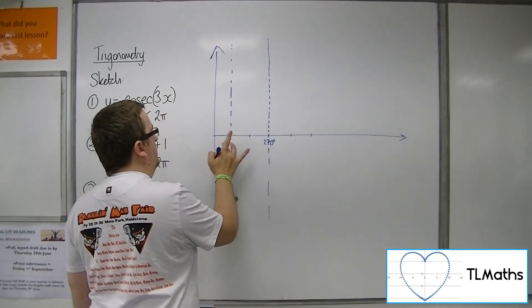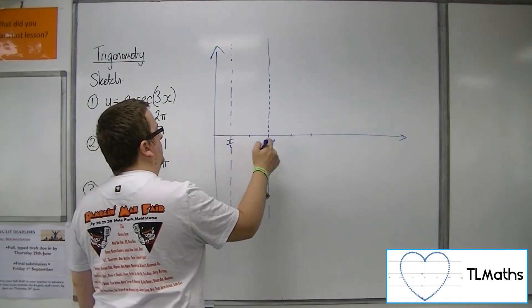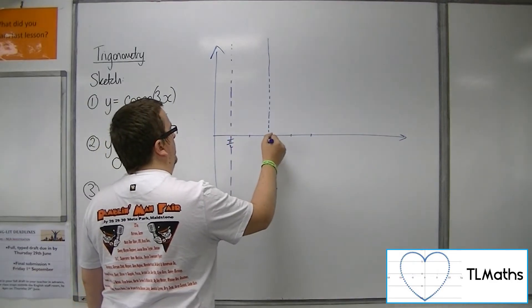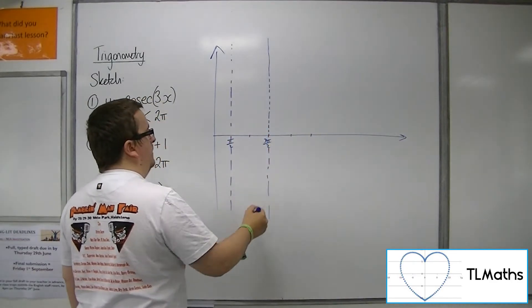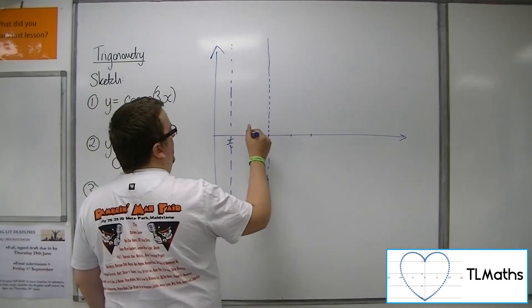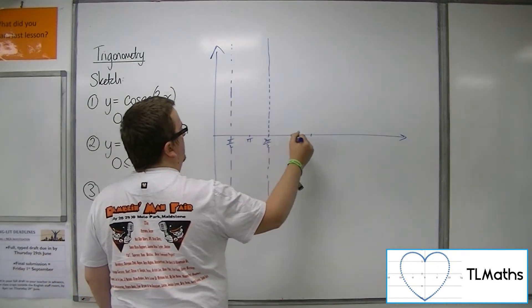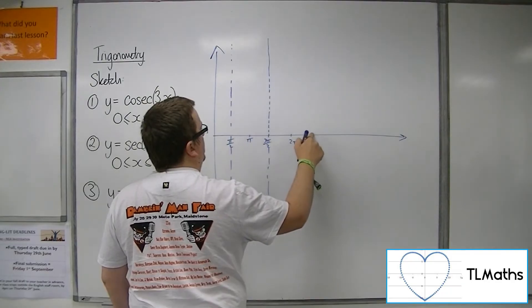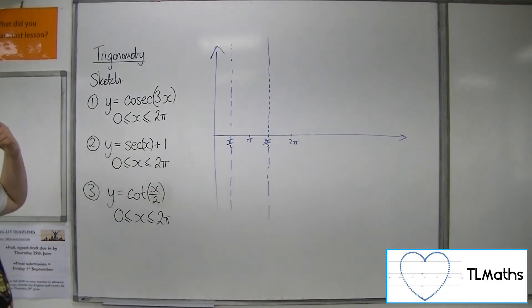Oh, I should be doing this in radians, shouldn't I? So pi over 2, 3 pi over 2. And then we get to 2 pi. So we've got pi here and 2 pi there. I don't need to go any further.